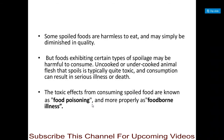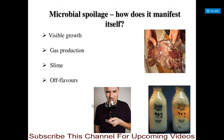Some spoiled foods are harmless to eat and may simply be diminished in quality. However, foods that exhibit certain types of spoilage may be harmful — for example, uncooked or undercooked animal flesh that spoils is quite toxic to the consumer. Consumption of such spoiled animal flesh can result in serious illness or death, and these toxic effects are known as food poisoning or foodborne illness.